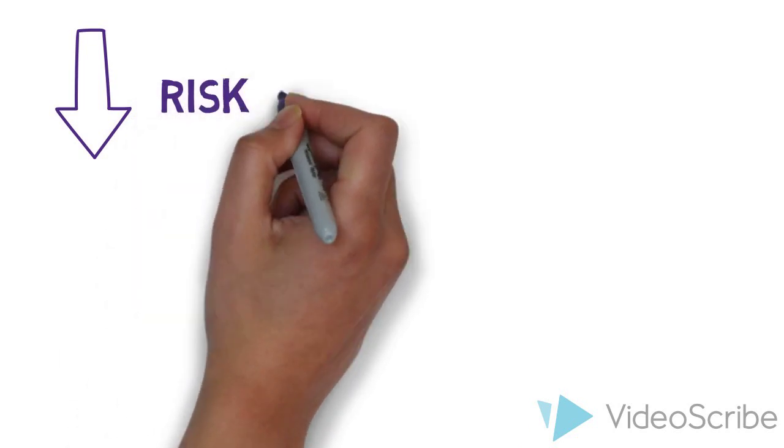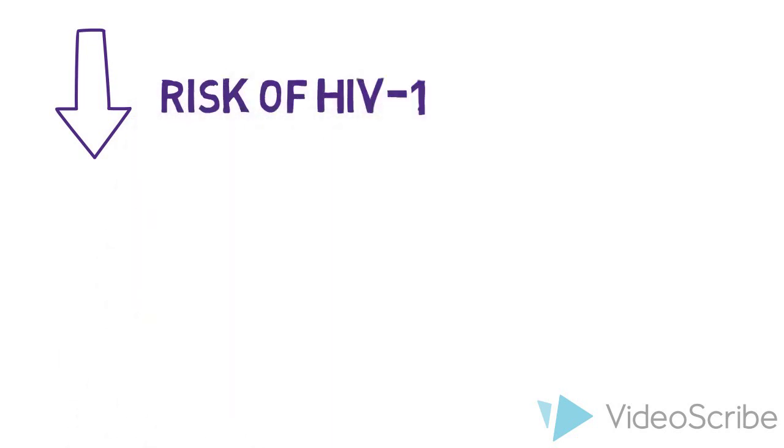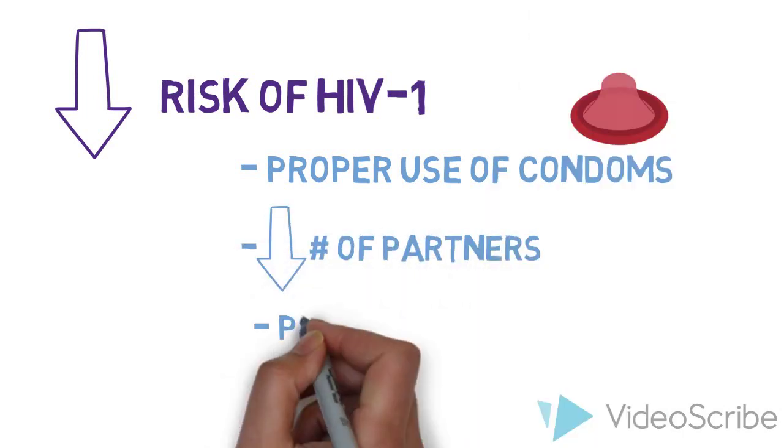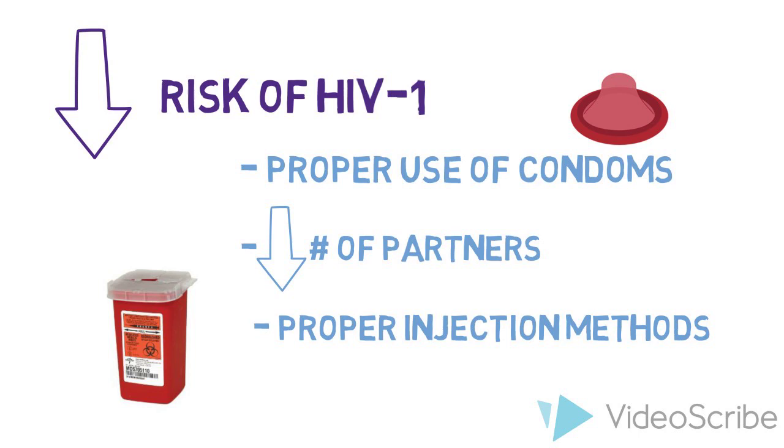There are multiple ways to reduce the risk of contracting HIV-1 apart from using PrEP, including the correct use of condoms, reducing the number of sex partners, and following proper injection procedures.